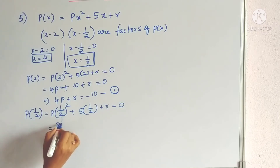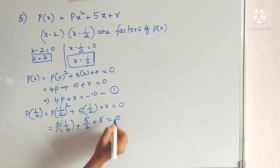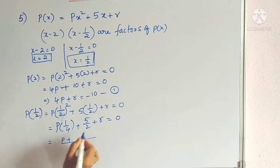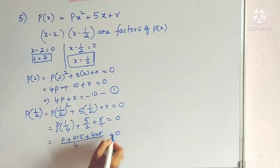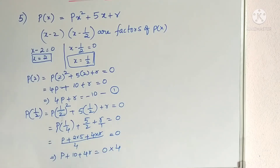Taking LCM as 4, we get p/4 + 5/2 + r = 0. Multiplying through by 4: p + 10 + 4r = 0.